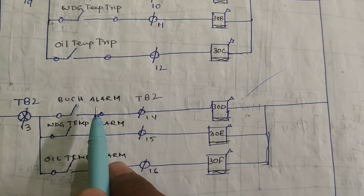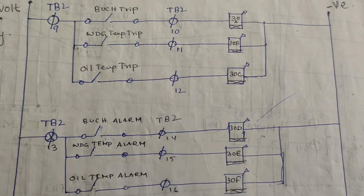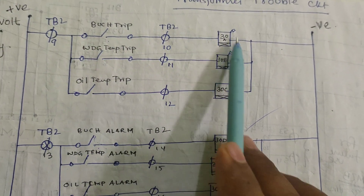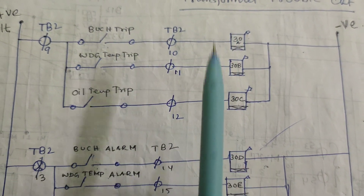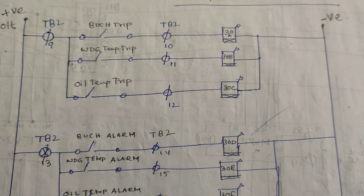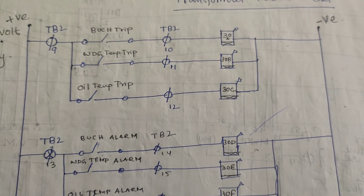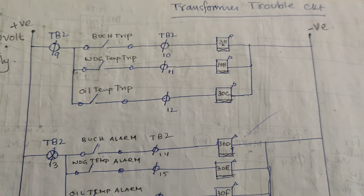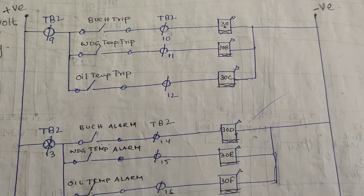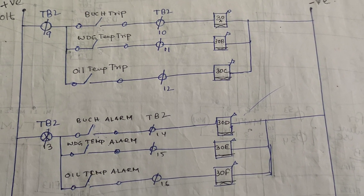If the Buchholz alarm is not attended to properly, more gas will be generated and the Buchholz trip will activate. The 30A flag drops and the breaker trip coil is activated, isolating the transformer. For a 132/33kV 50 MVA transformer or a 220/132kV 160 MVA transformer, the 132kV circuit breaker trips via the 86 relay and the 33kV side also trips.